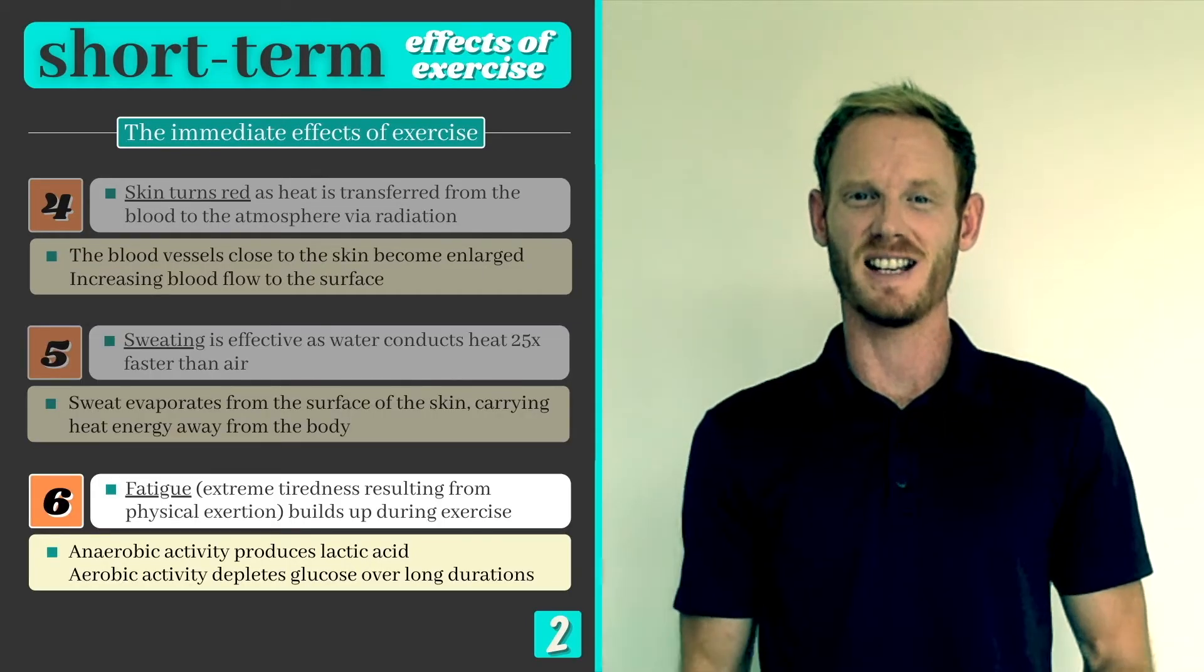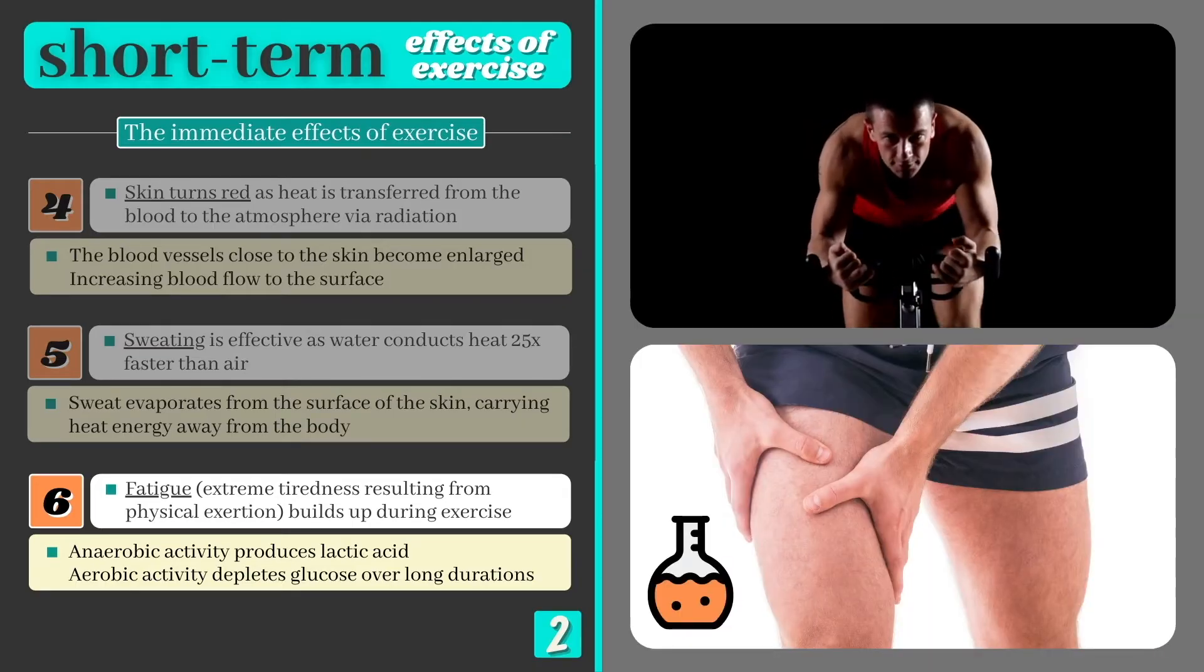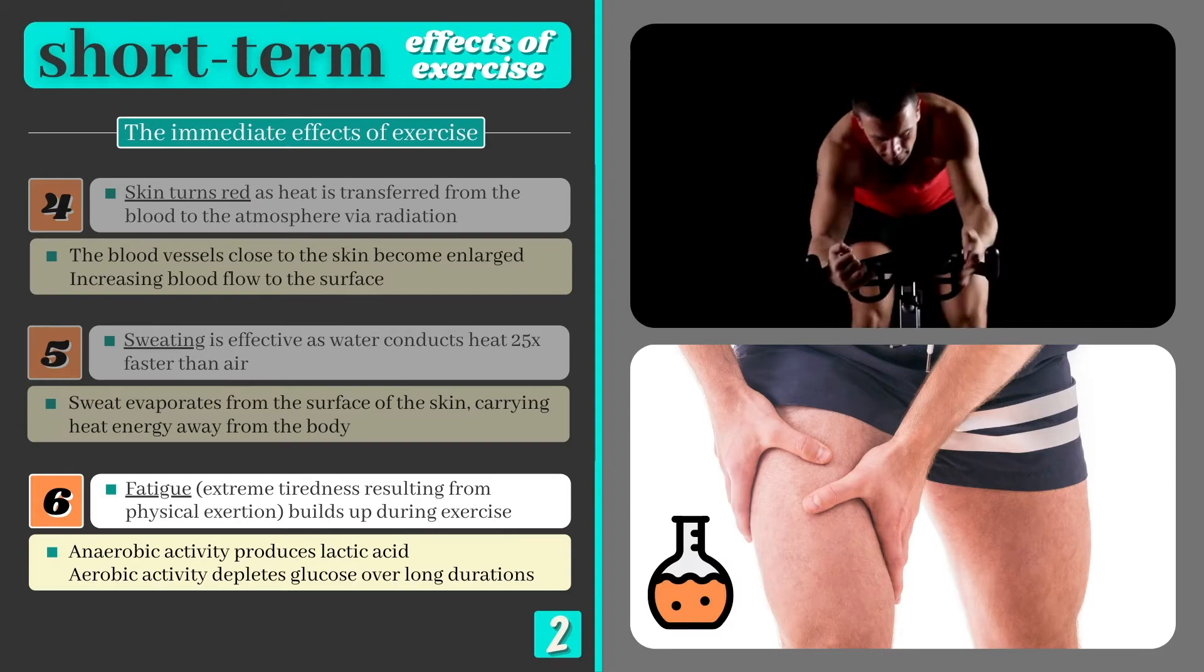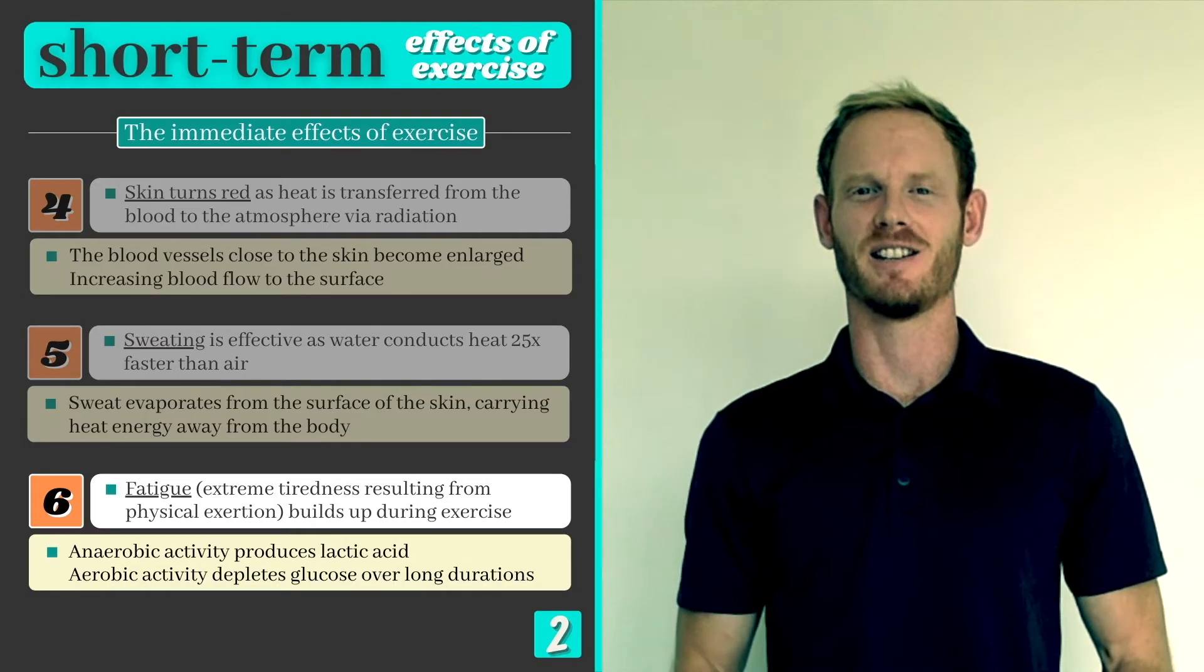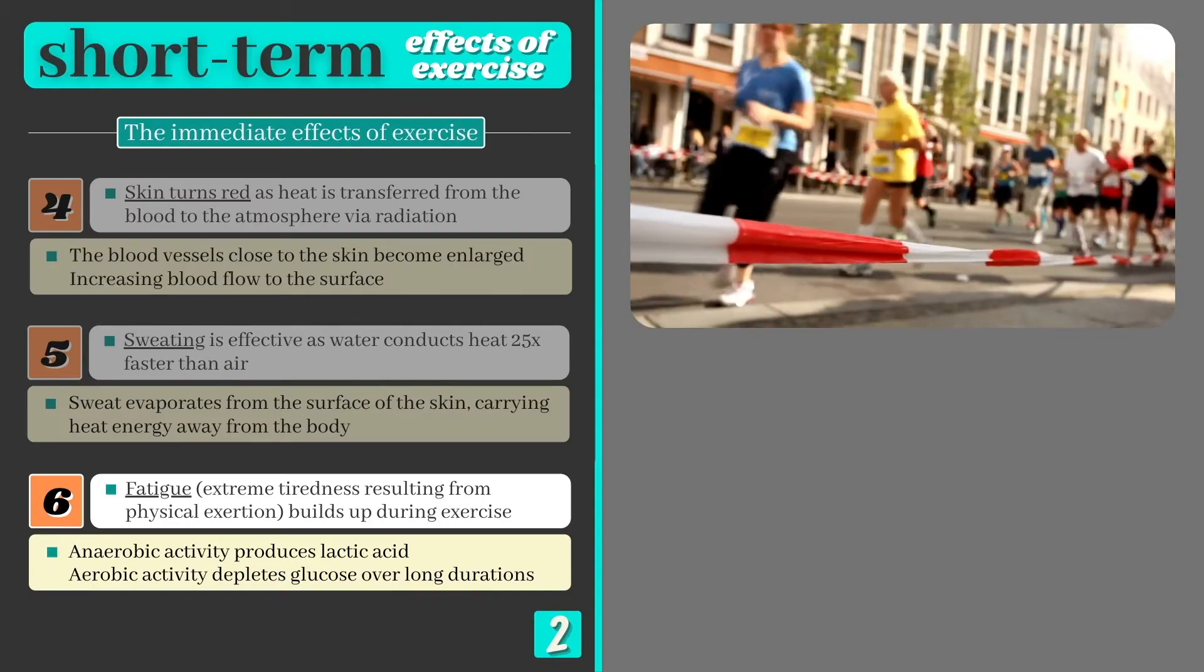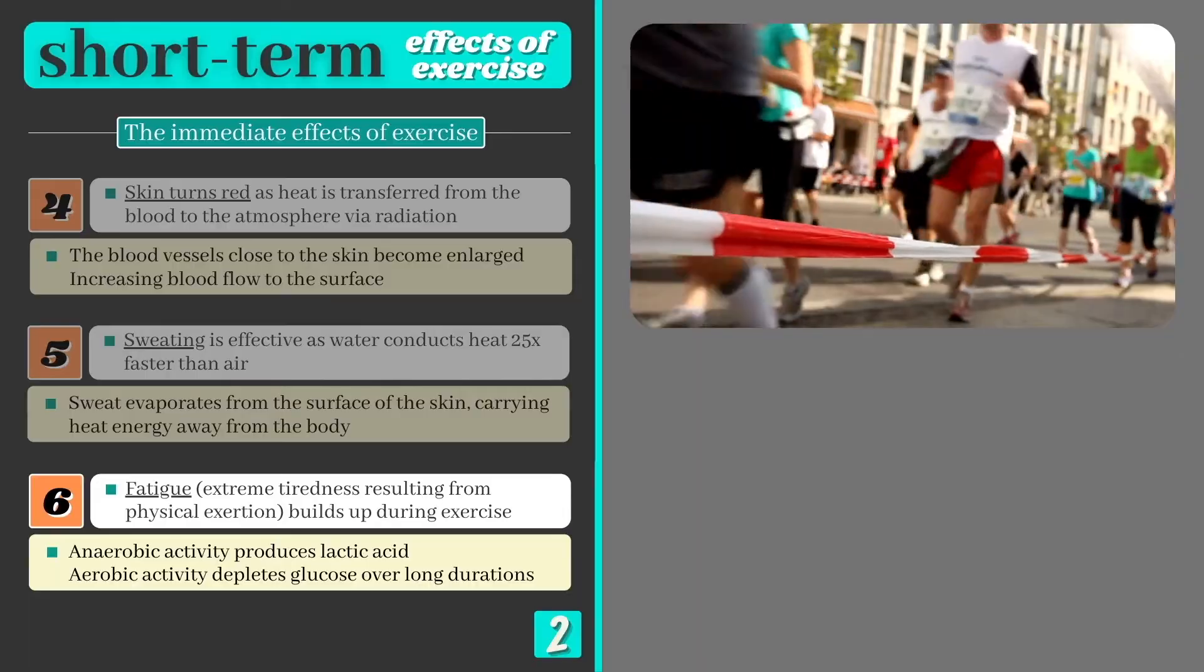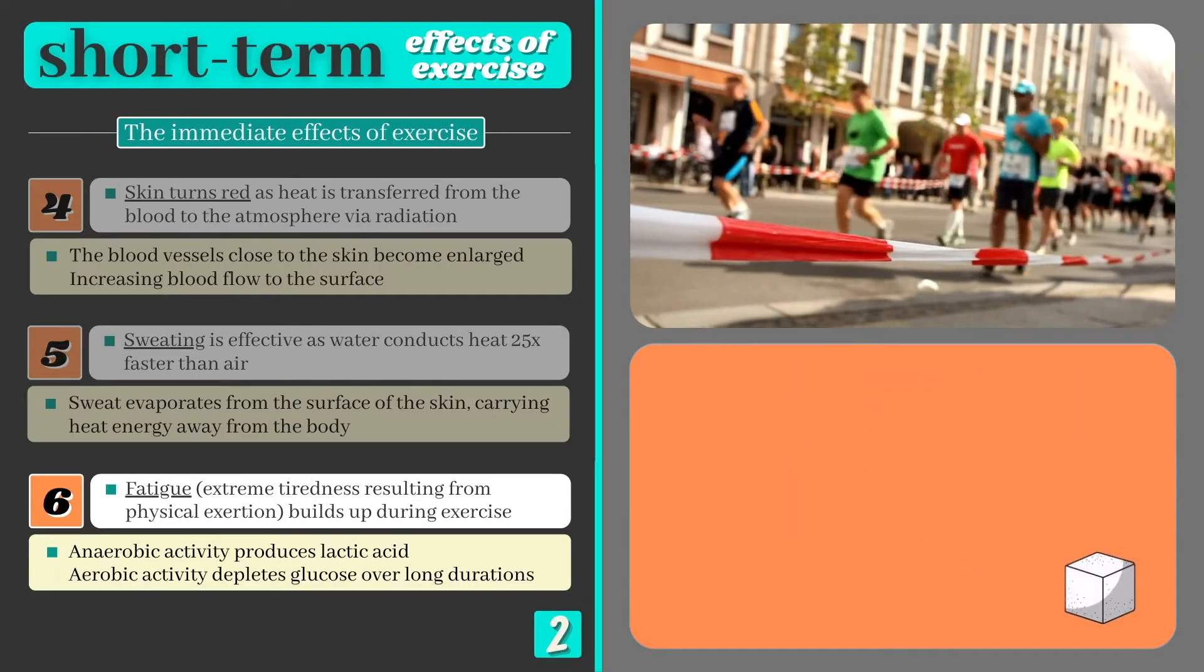Our next effect of exercise is fatigue, which can be defined as extreme tiredness resulting from physical exertion. When performing anaerobic activities such as sprint cycling, lactic acid accumulates in our fast twitch muscle fibers, reducing the amount of force that they're able to produce over time. This effect is localized to the muscles being used, so fatigue will be felt in the legs, but not the arms, when completing a series of squats. Aerobic activities such as long distance running can also cause you to tire however. Although slow twitch fibers can work for several hours at low intensities, the fuel source glucose will become depleted over time and fatigue will be felt throughout the body as energy production slows.